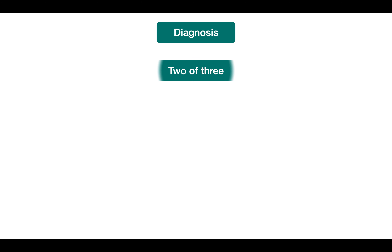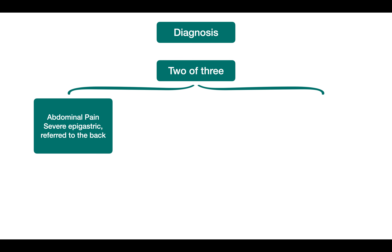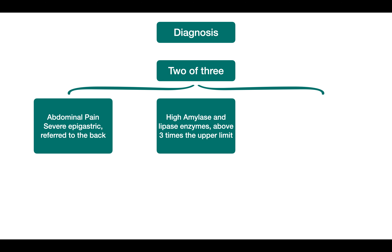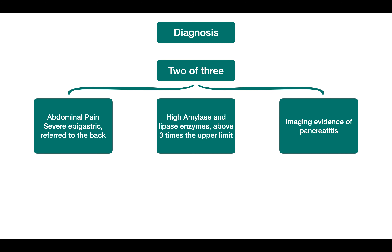Diagnosis of acute pancreatitis depends on detecting two of three criteria: first, abdominal pain suggestive of pancreatitis — severe epigastric pain referred to the back; second, high amylase and lipase levels above three times the upper limit of normal range; and third, imaging evidence of pancreatitis, usually by CT abdomen. Two of those three gives a diagnosis.